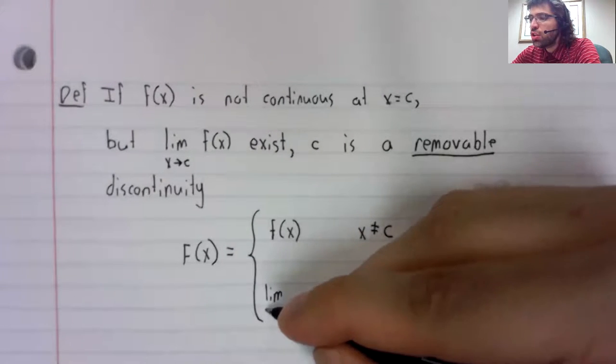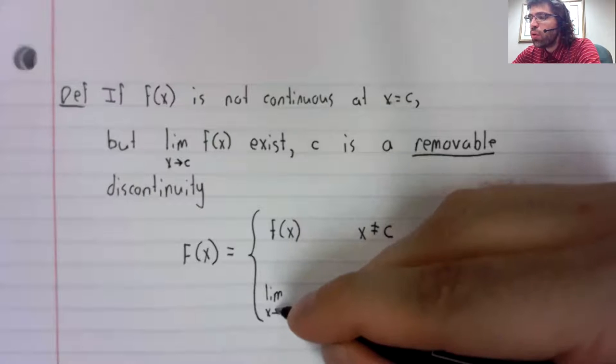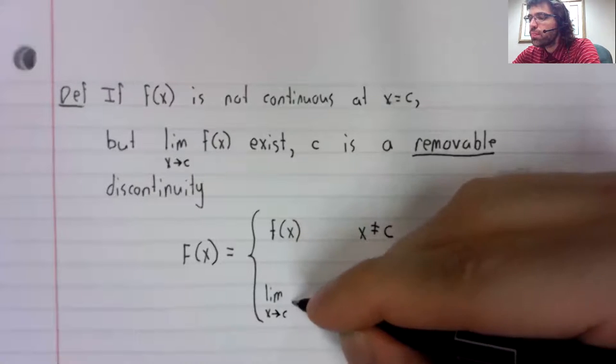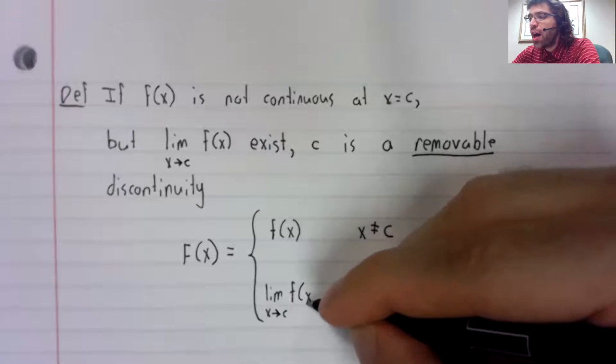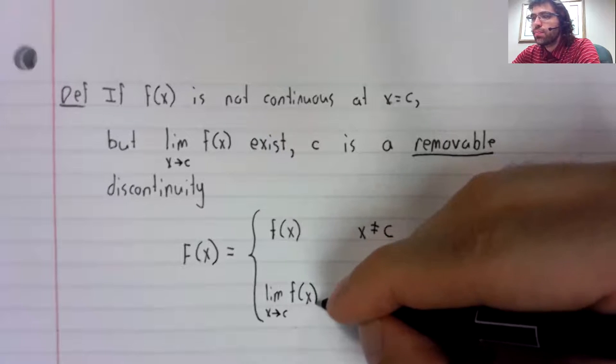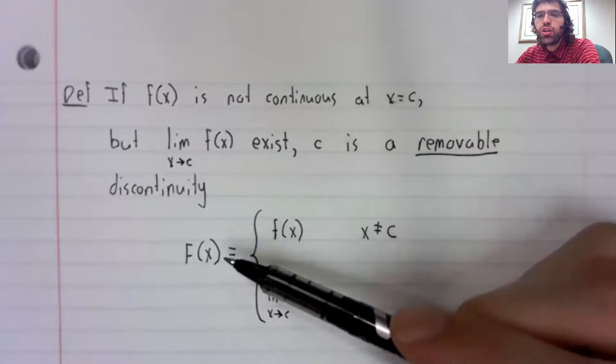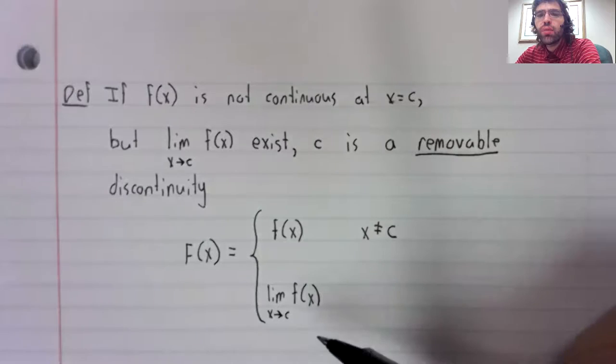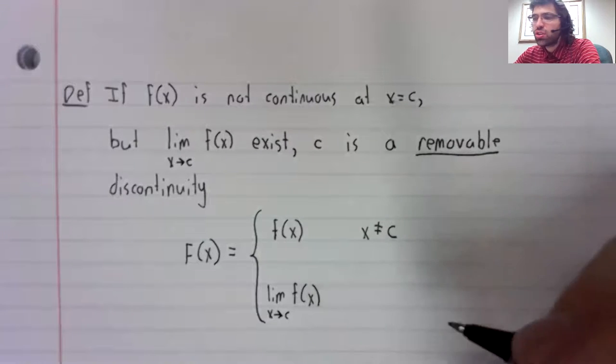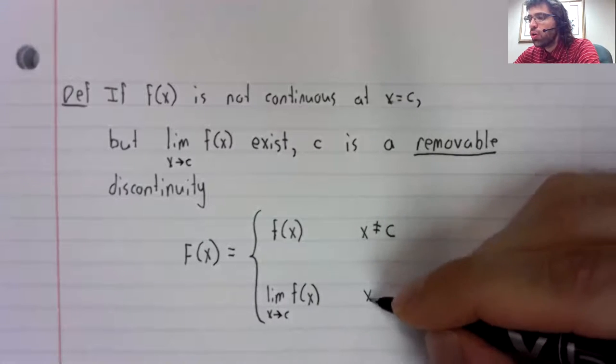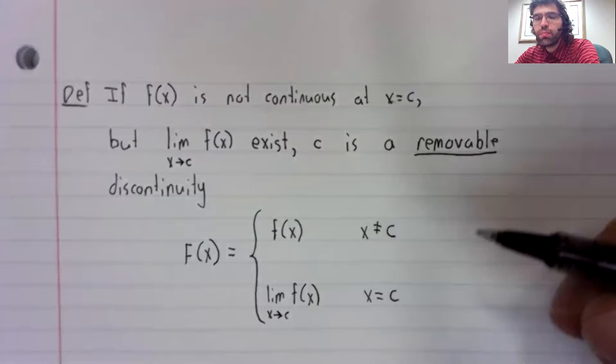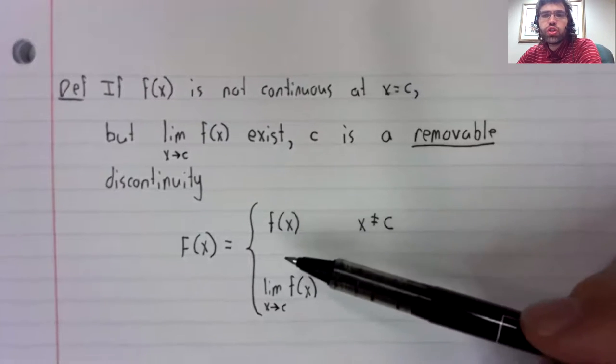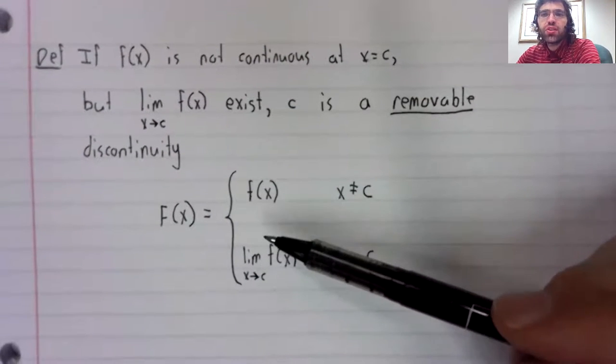At the discontinuity itself, we define this new function to be the limit of the old function. This function is continuous.